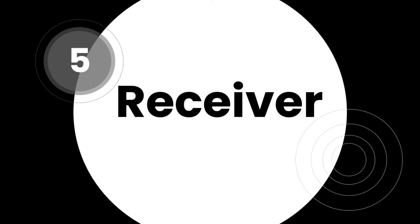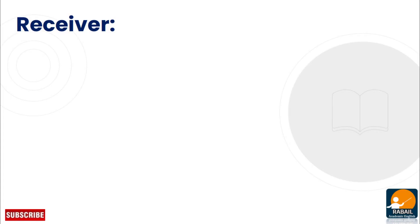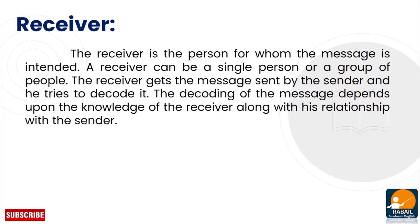Number five is the receiver. The receiver is the person for whom the message is intended. A receiver can be a single person or a group of people. For example, this lecture is being communicated not to a single person but to a group of people. Similarly, at a CNG station or petrol pump where mobile and smoking are prohibited — that message is intended for a large group of people.